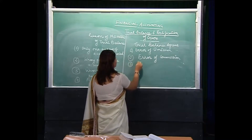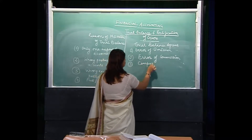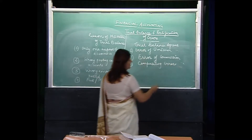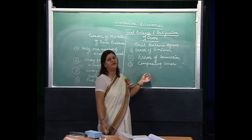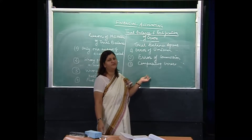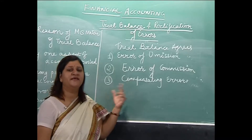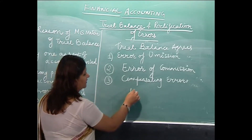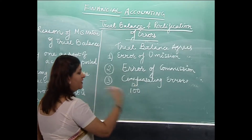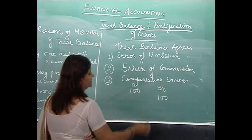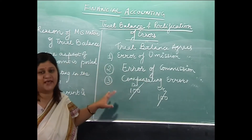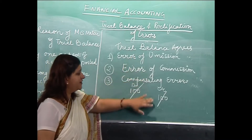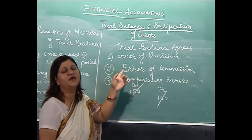Another type of error is compensating errors. By compensating errors we mean the effect of one error is nullified by the effect of another error. If we committed a mistake on the debit side of 100 rupees and the same sort of mistake is committed on the credit side — for example, 100 rupees were underwritten on the debit side, and similarly due to posting error, 100 rupees were shown less on the credit side — they will mitigate the effect of each other. Although there is an error, the trial balance may agree and we are not able to locate these errors.